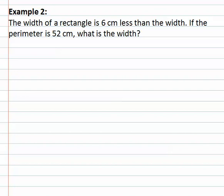In this problem, we're told the width of a rectangle is 6 cm less than the length. If the perimeter is 52 cm, what is the width?